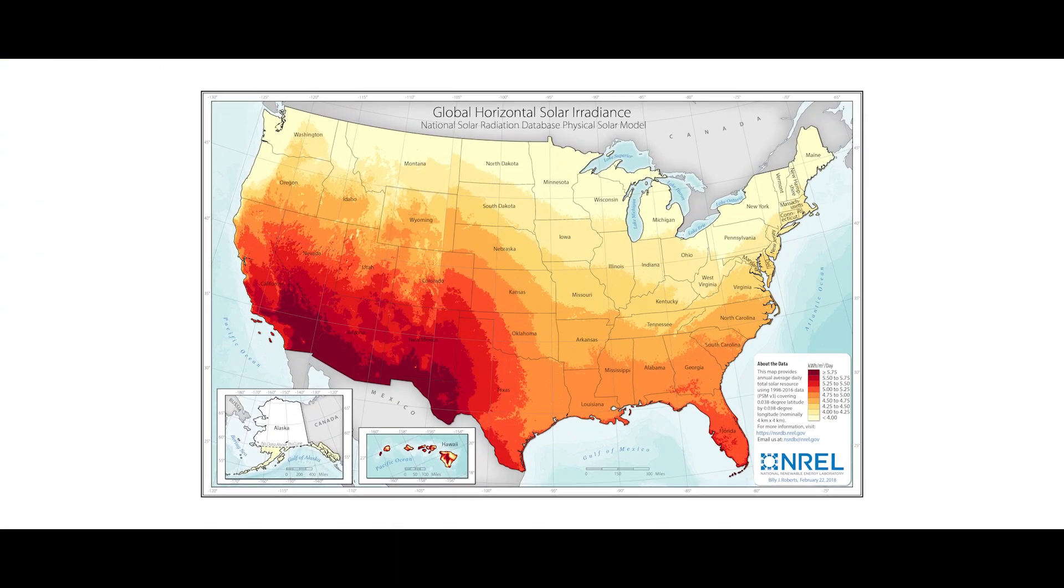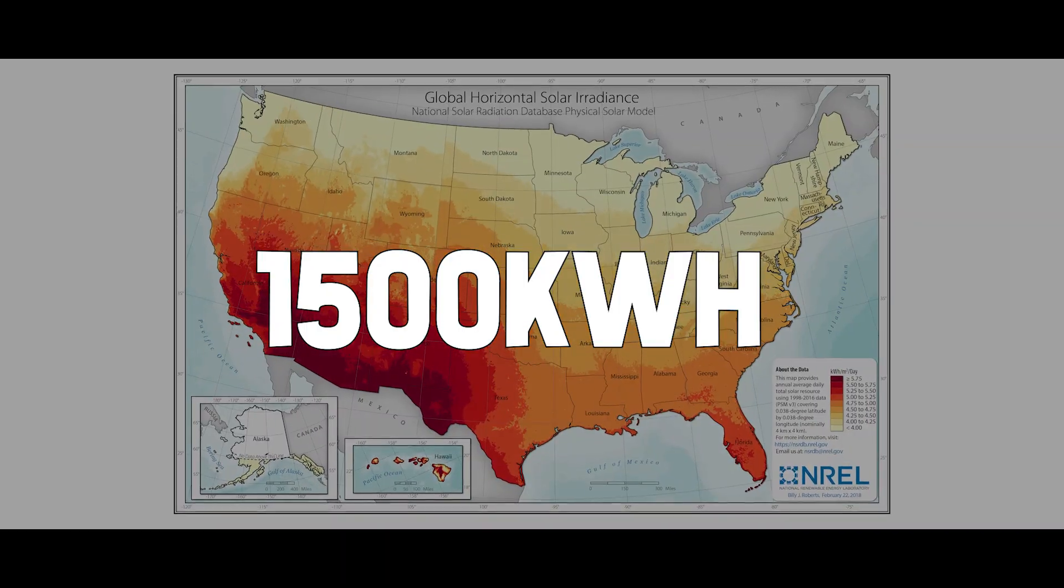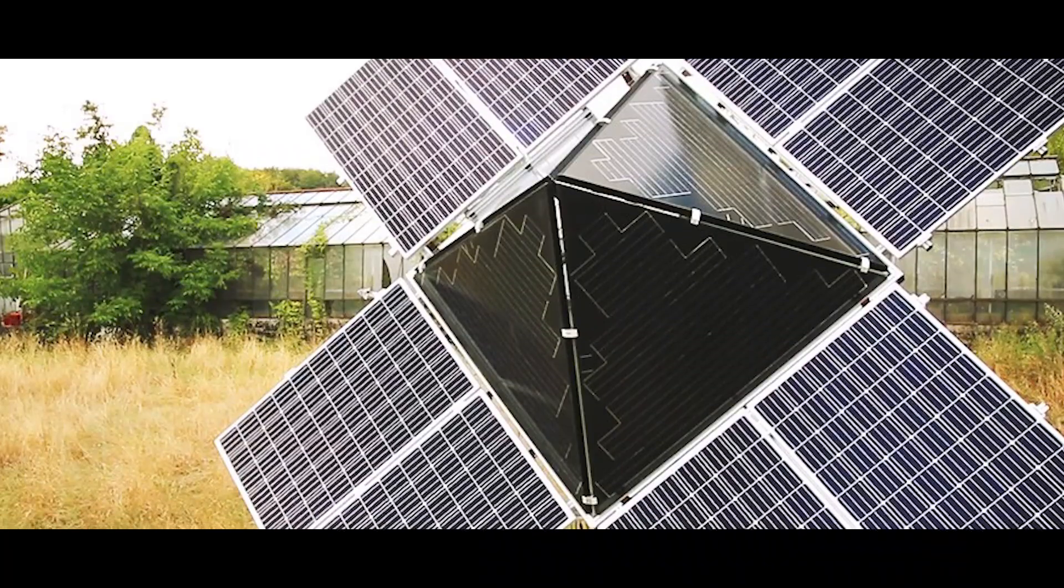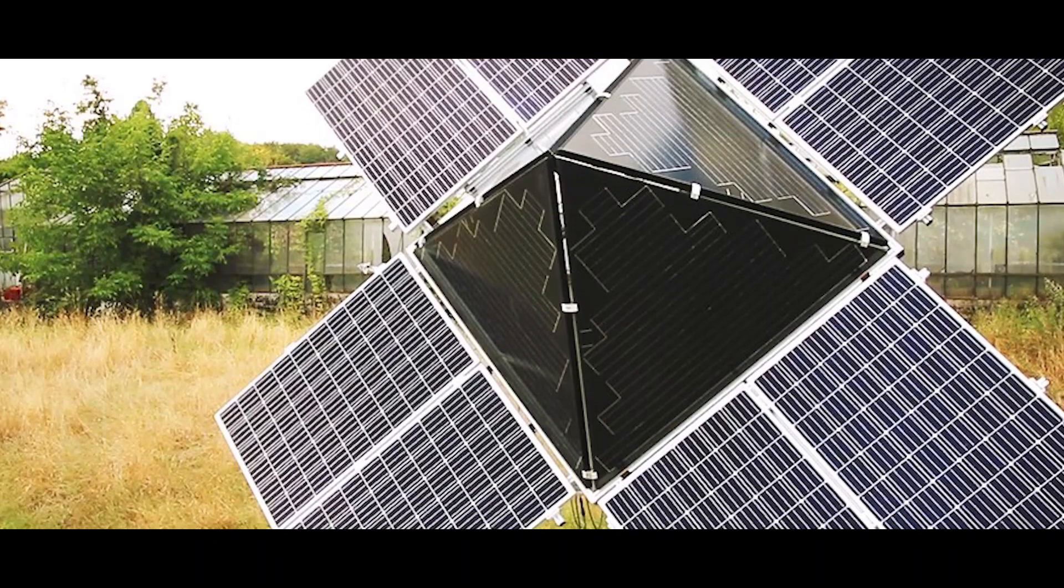That's the reason why northern states achieve only an average of about 1,500 kilowatt hours of solar energy annually. But with the solar funnel, this principle was taken even further.